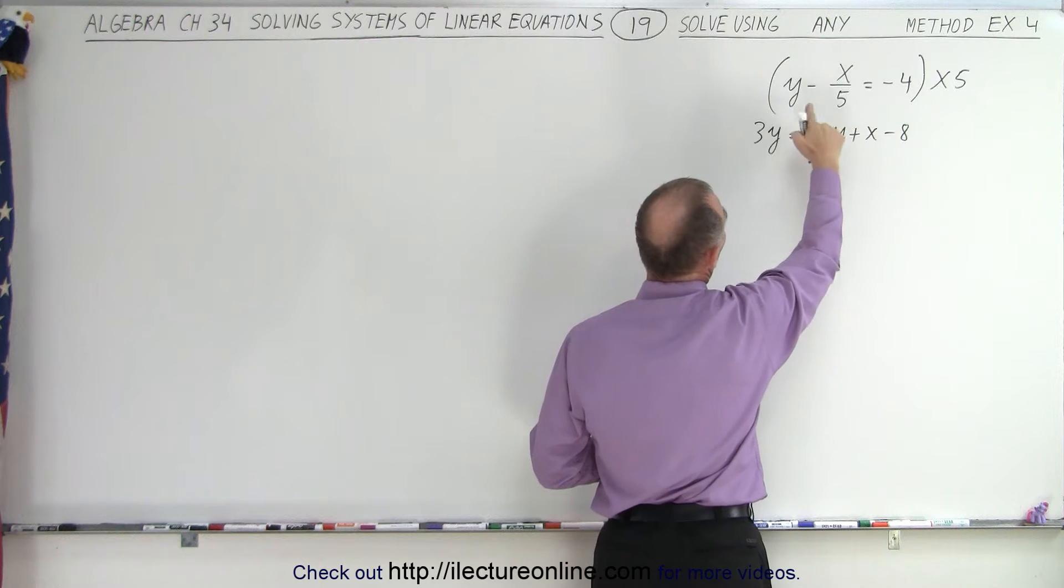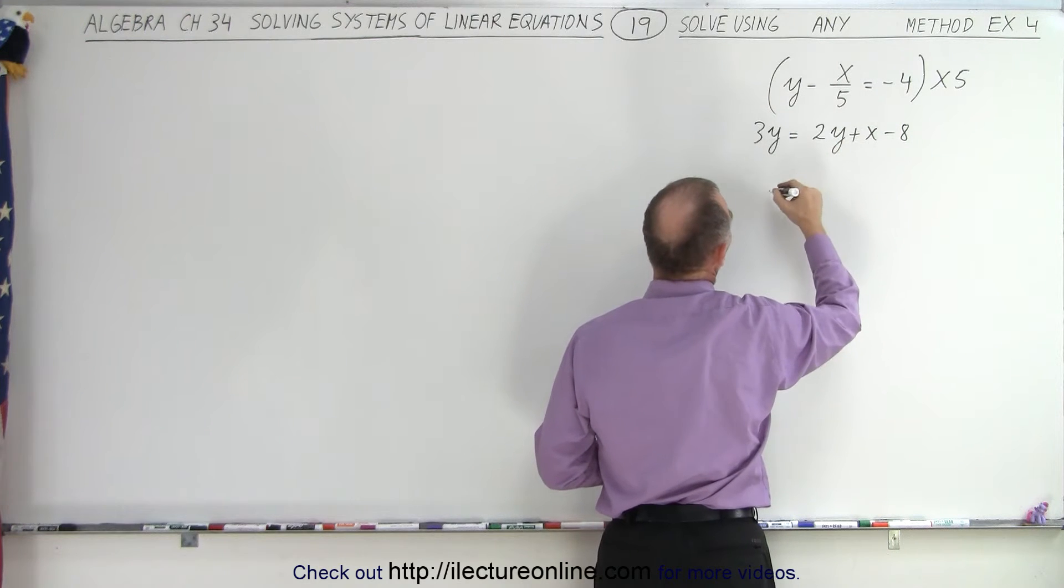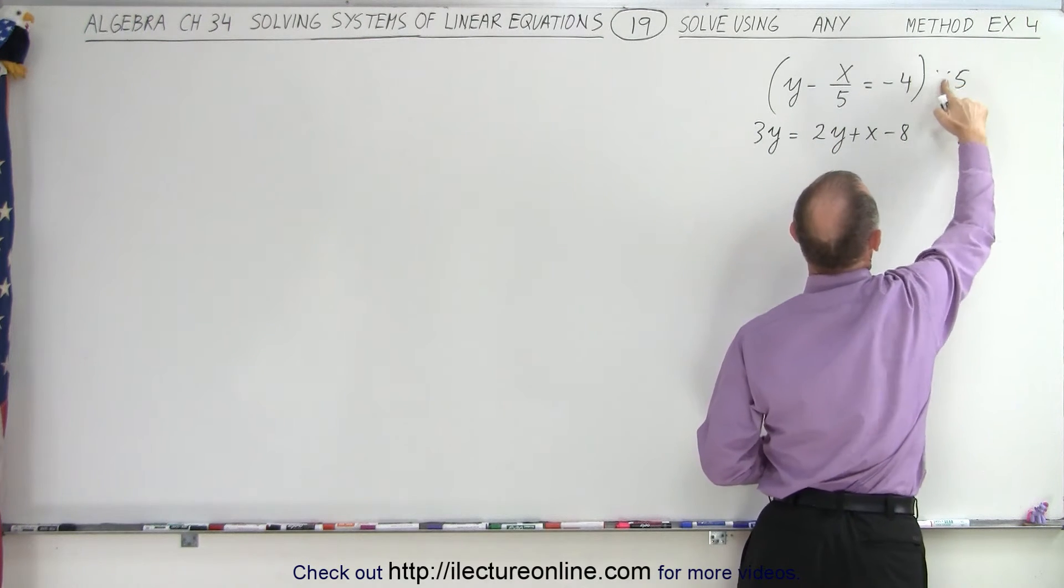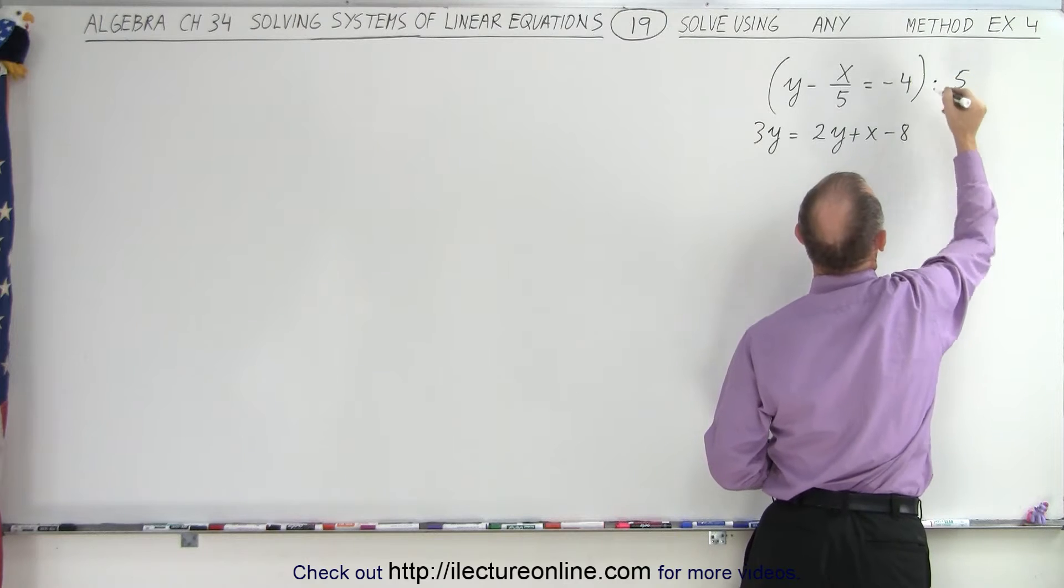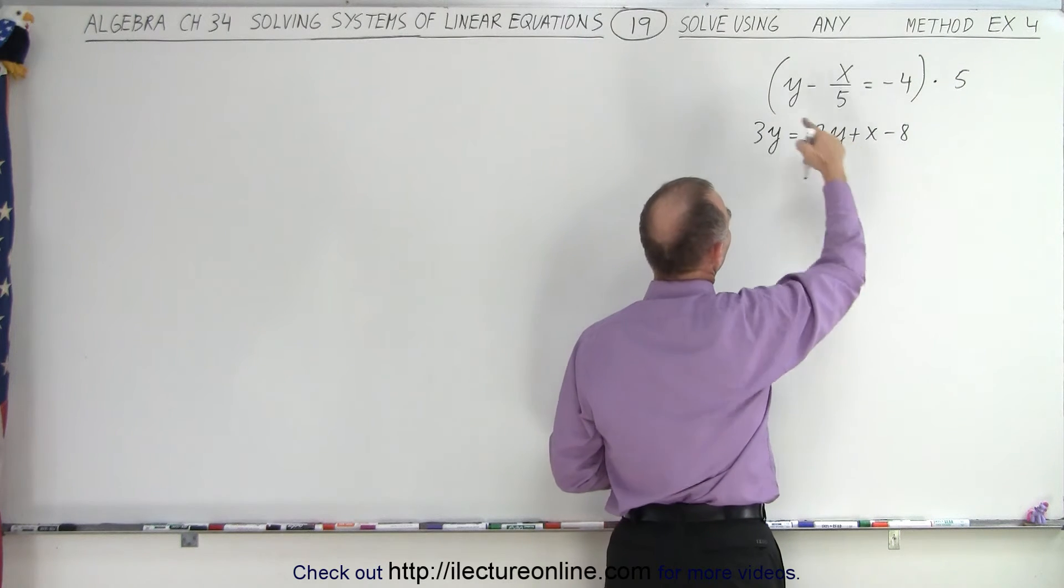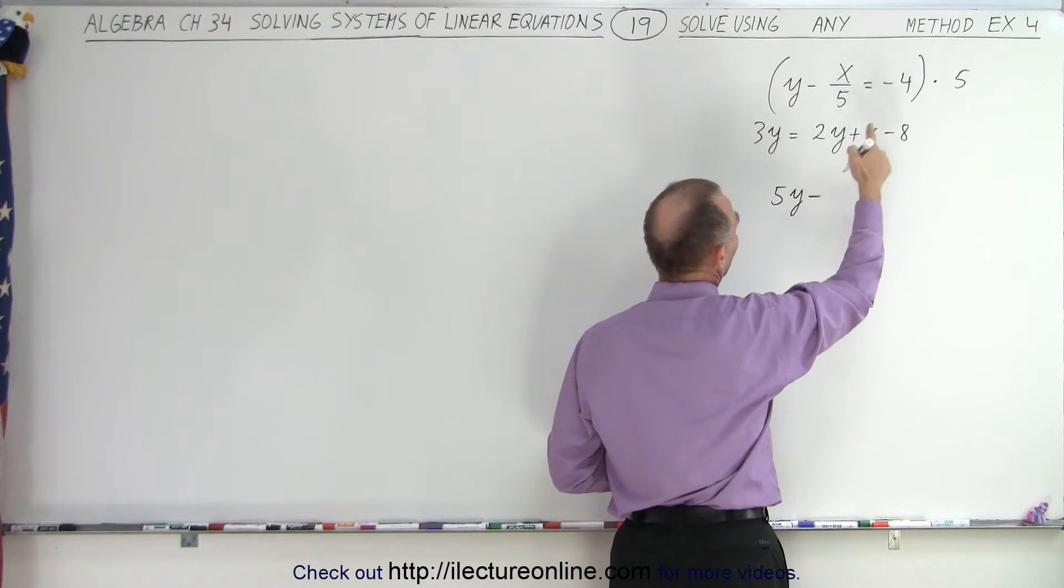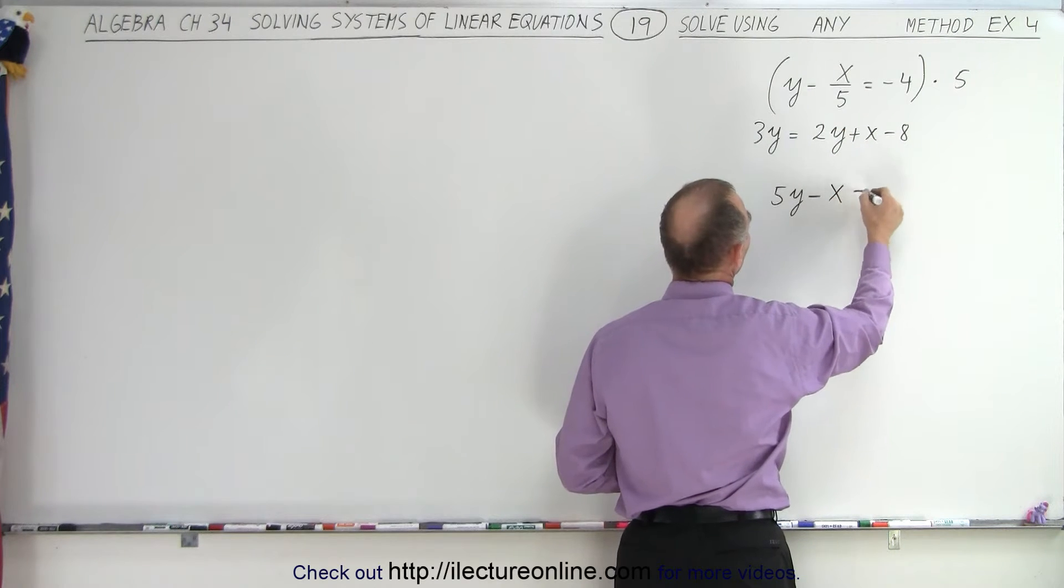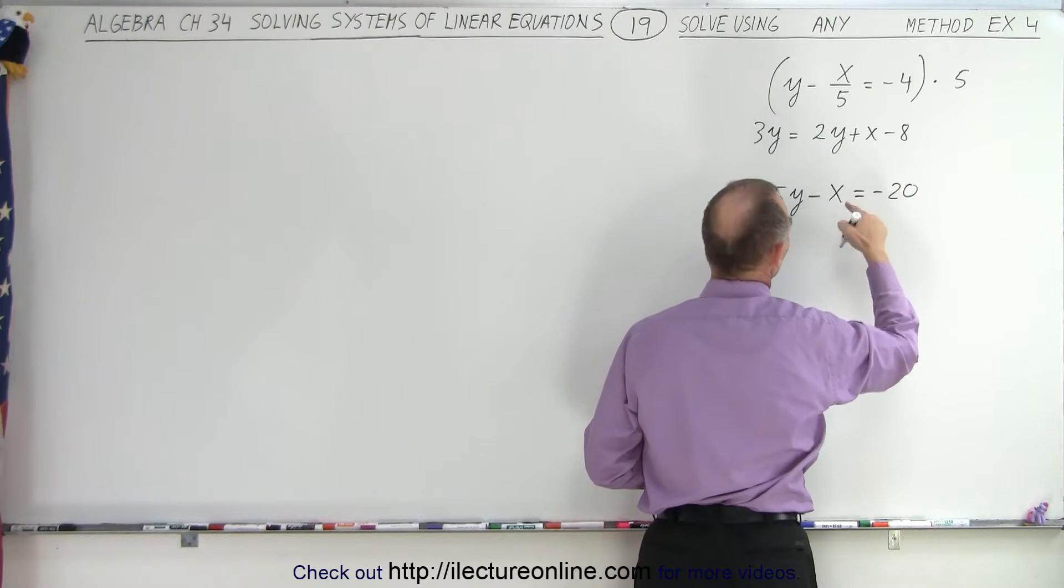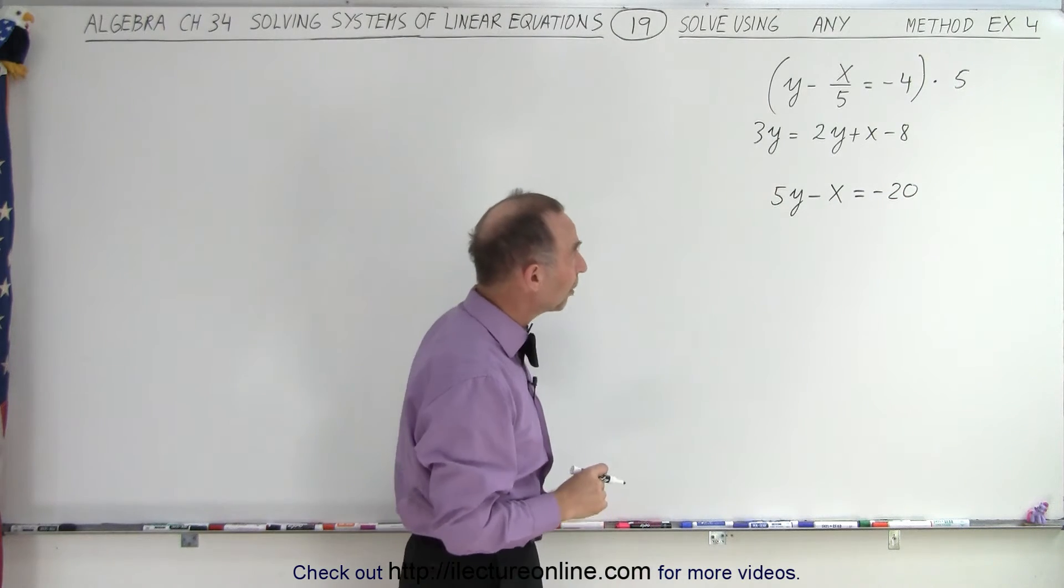So the two equations then become 5 times y would be, and I don't want to use an x here because that gets confusing, so I'll just put a little dot there. So 5 times y is 5y, minus x divided by 5 times 5, you just get an x, equals minus 4 times 5 is minus 20. So that's our new top equation.